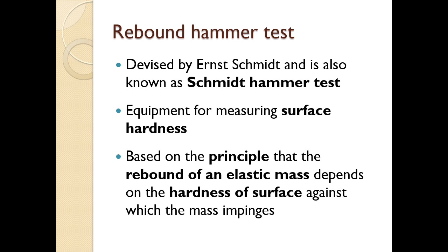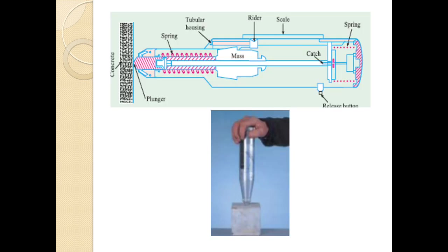The rebound hammer test was devised by Ernst Schmidt and is also called the Schmidt hammer test. It is equipment for measuring surface hardness, based on the principle that the rebound of an elastic mass depends on the hardness of the surface against which the mass impinges. In the exam, you may be asked to explain the rebound hammer test with a neat sketch, so you have to study this diagram carefully.